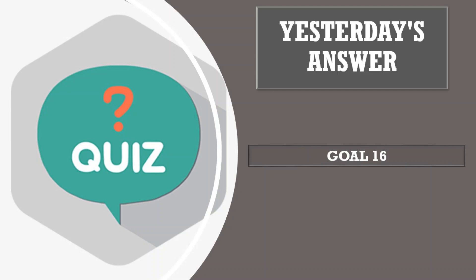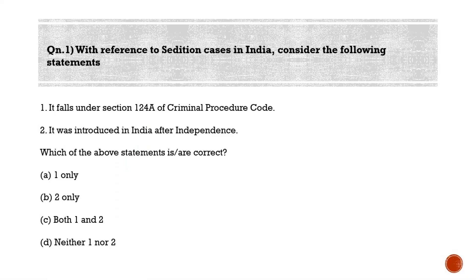Let's now start today's session. First question: with reference to sedition cases in India, consider the following statements. Statement one: it falls under Section 124A of the Criminal Procedure Code. Statement two: it was introduced in India after independence. Both statements are wrong, so the answer is option D — neither one nor two.